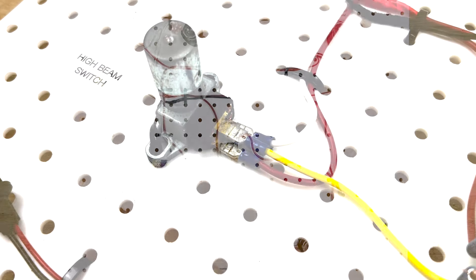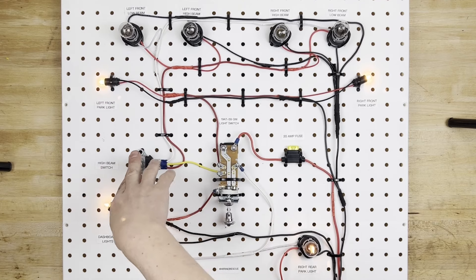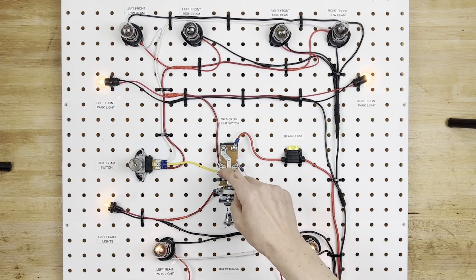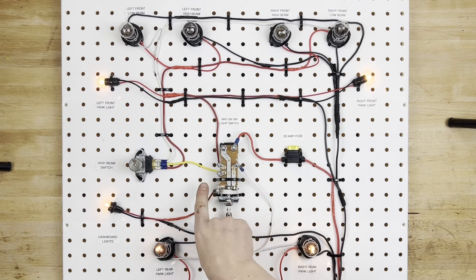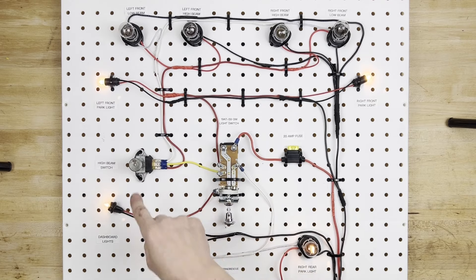And then of course there's the high beam switch, which is normally mounted to your floor pan, and you can snap it on and off with your foot. All right, so right here, there is a head terminal, and that's this yellow wire, which comes out and goes to the center point of your dimmer switch, or high beam switch, depending on what you want to call it.